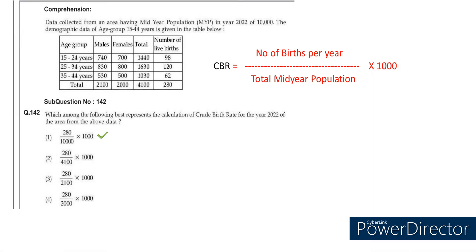Coming to the second question, they are asking us to calculate the crude birth rate. We know the formula: crude birth rate is nothing but number of births per year divided by total mid-year population, multiplied by 1000. Whenever you see the term crude, the denominator becomes total mid-year population. In this question, the number of births per year are 280 — the total number of live births from the table. Divided by total mid-year population in year 2022, which was 10,000. So 280 divided by 10,000 multiplied by 1,000. The answer is option 1.